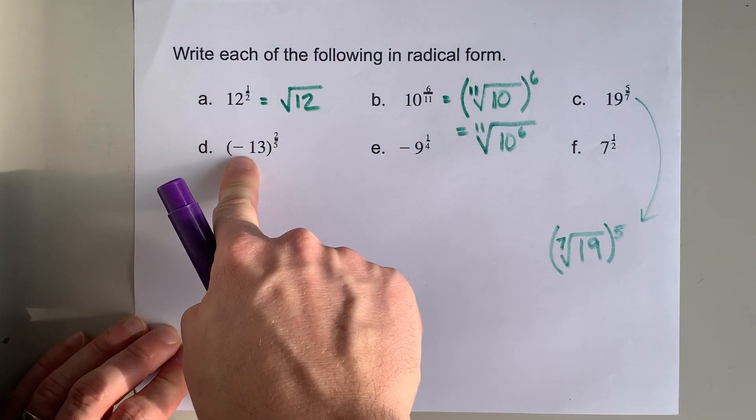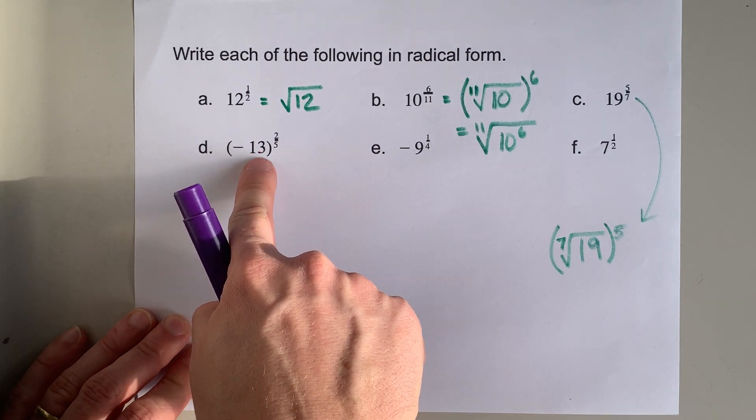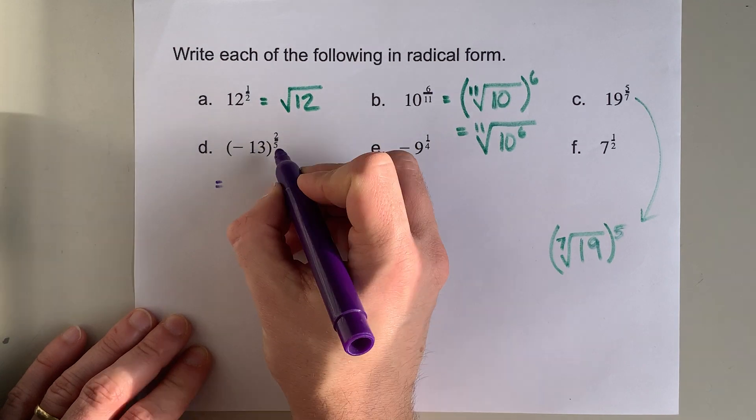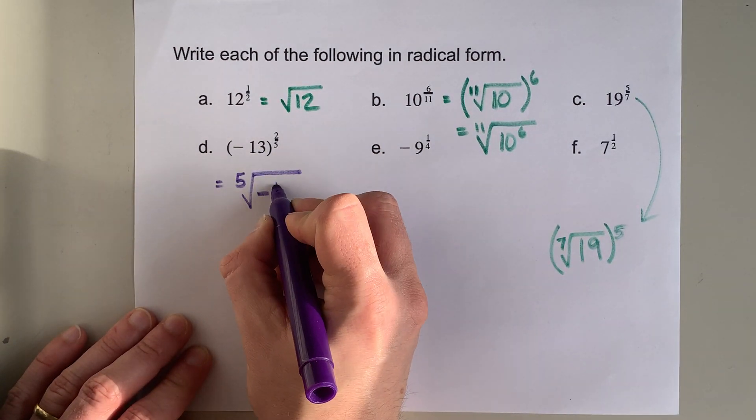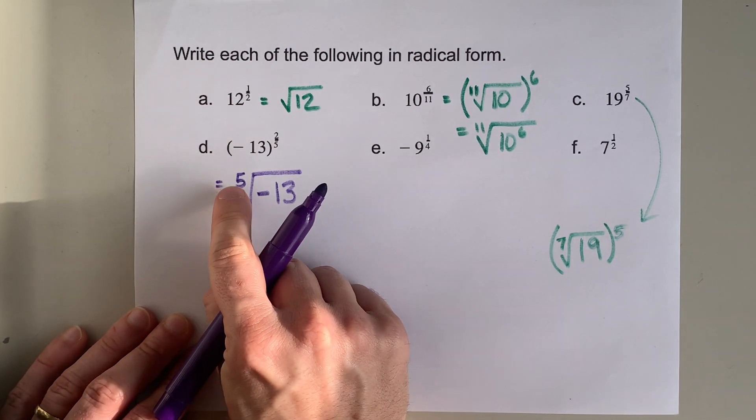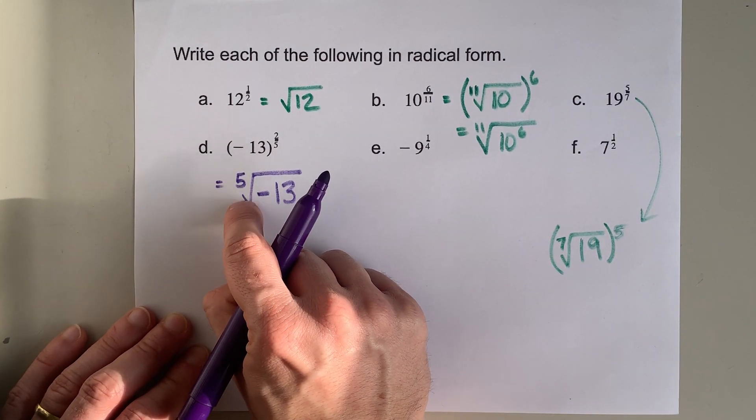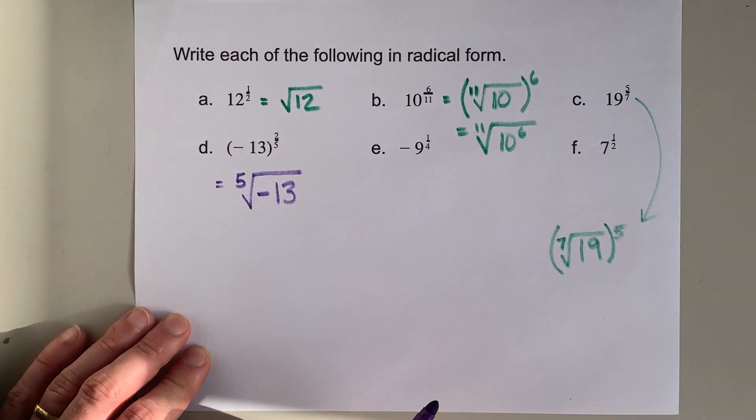Now, that includes whether or not you have a negative. This negative is on the 13, and we are applying this whole exponent to negative 13. So I'm going to take the fifth root of the whole negative 13, and you are allowed to take odd roots of a negative number. I know you're not allowed to square root a negative number, but when that number is odd, you can do it.